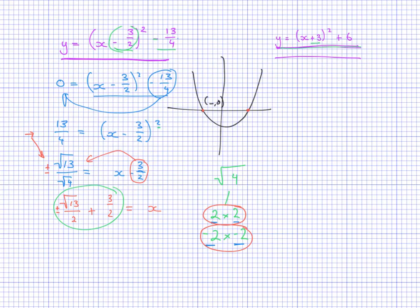So now you can see that my two solutions will be plus root 13 on 2 plus 3 on 2, so it will look like this will be 1, root 13 over 2 plus 3 over 2, or the other one will be minus root 13 over 2 plus 3 on 2.